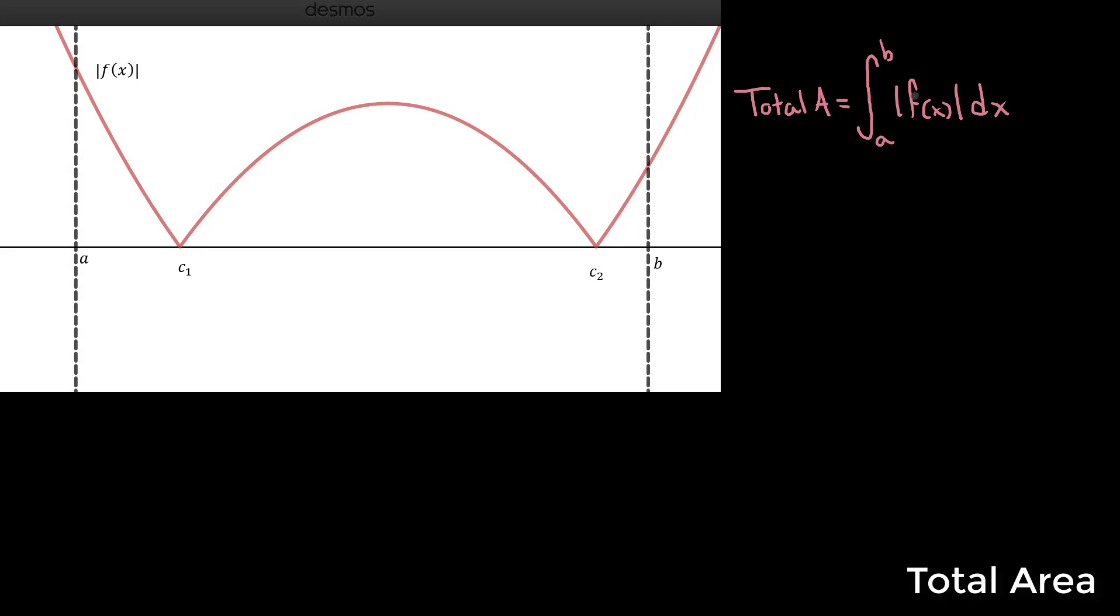Now, let's take another look at the graph. If we observe the absolute value of this function, we see that all regions or all portions of this curve are now at or above the x-axis. If we were to mark c1 and c2 as the zeros, we can rewrite our integral in the following way.